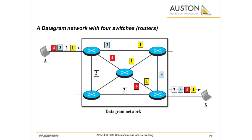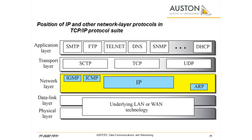In a datagram network, each packet is treated independently of all the others. Even if a packet is part of a multi-packet transmission, the network treats it as though it existed alone. Packets in this approach are referred to as datagrams. The network layer in version 4 can be thought of as one main protocol and three auxiliary ones. The main protocol, Internet Protocol version 4, IPv4, is responsible for packetizing, forwarding, and delivery of a data packet.